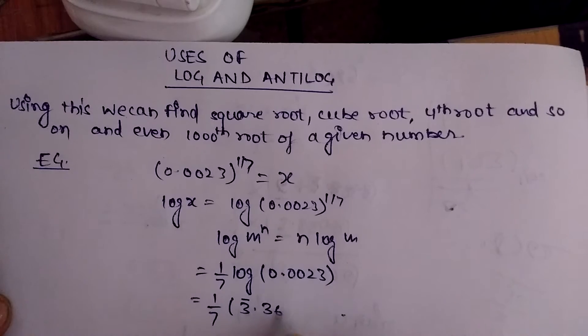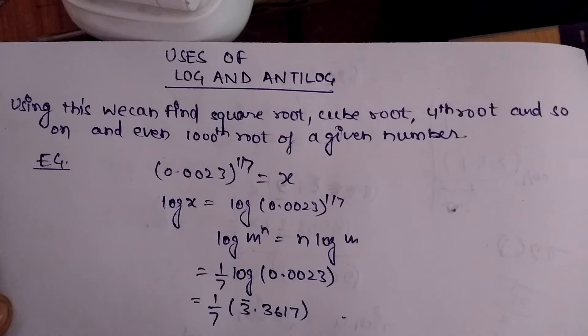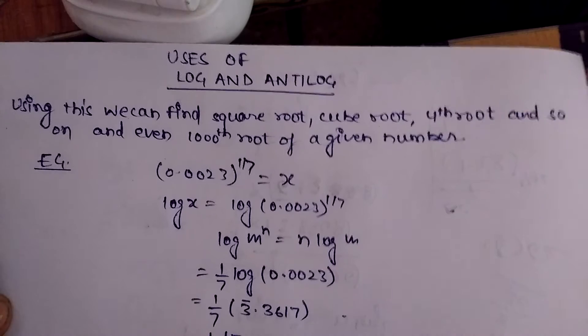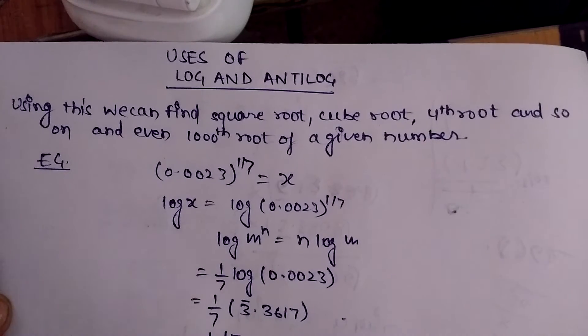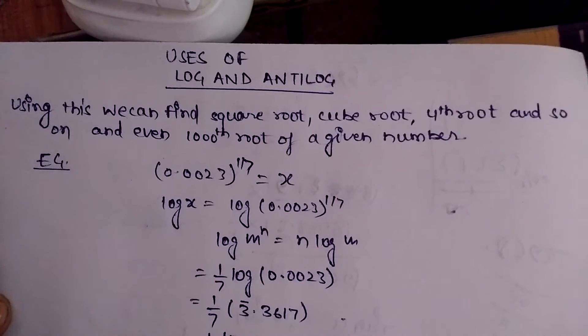For making it simple so that we can divide, this is a negative number, so 1/7 of (7̄ + 4.3617), and on dividing by 7 we will get the number 1̄.6231. So this is the value of log x.